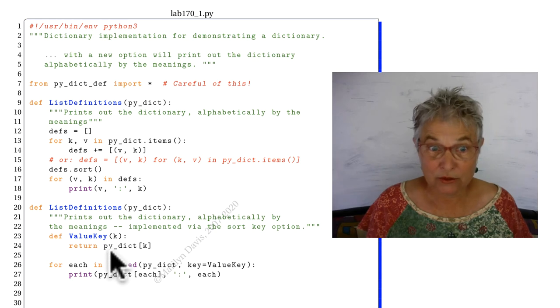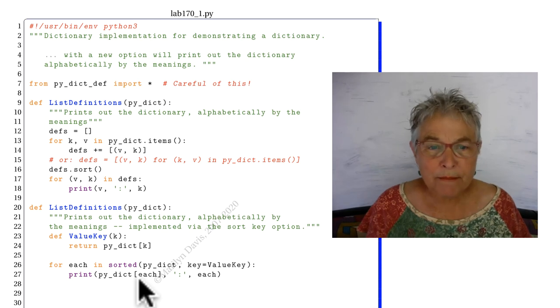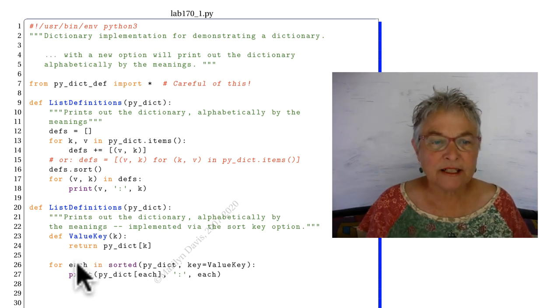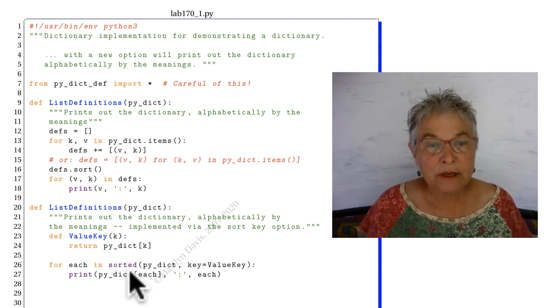Which are the values, and that works like a charm. But you want to remember that the each that comes out is an original key, but sorted by value. So I'm printing out the value and then the key.